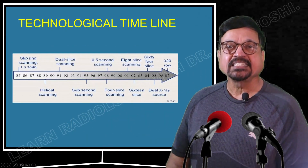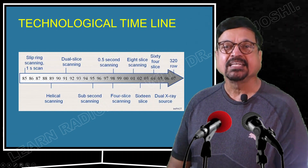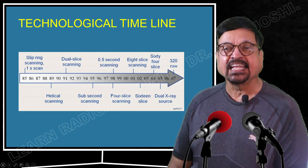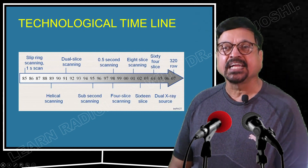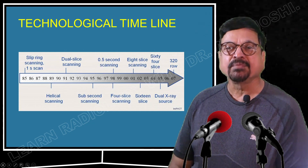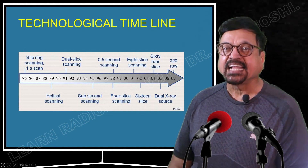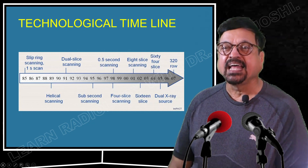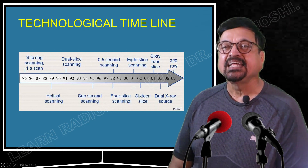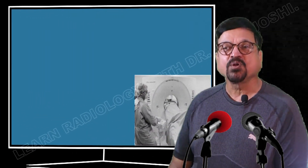CT scans were in practice from 1985, starting with the slip-ring scanning technique with one-second scanning. Then we came to helical scanning in 1989, dual slice in 1991-92, sub-second scanning of 0.5 seconds developed between 1995 and 1998. Four slices were introduced after 1998, then 16 slices in 2001, and subsequently 64 slices were introduced in 2004. By now we are at dual source CT scanning, which will be covered in another lecture.